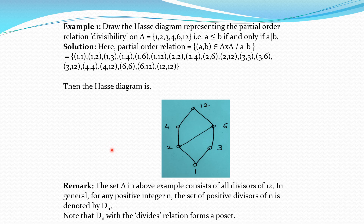1 divides 2 and 1 divides 3 directly — there is no element in between such that 1 divides A and A divides 2 or 3. So above 1, we take 2 and 3 and join them by line segments. Then 2 is related to 4 (2 divides 4), and this is a direct relationship since there is no element A such that 2 divides A and A divides 4. So we take 4 above 2 and join them by a line segment.